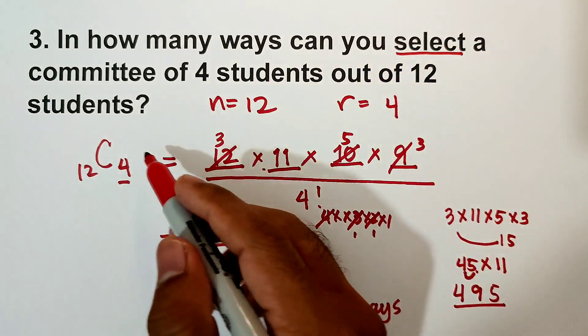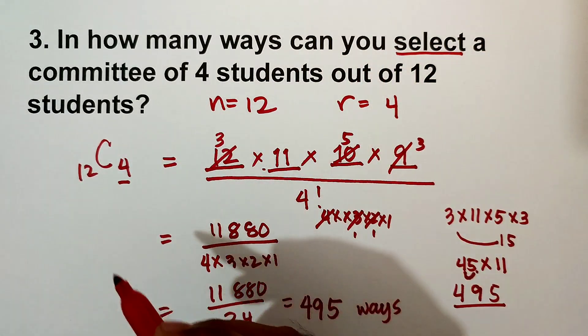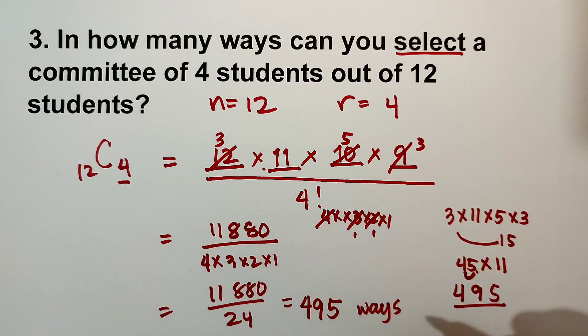So 495 ways of selecting a committee of 4 students out of 12. So that's it, we have 495 ways. So I hope you learned from this video, and if you learned, please subscribe to our channel and hit the notification bell so you'll be updated with new videos.